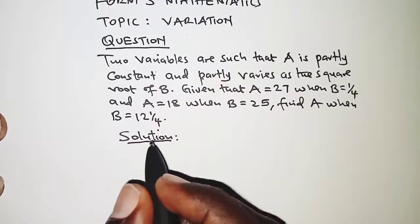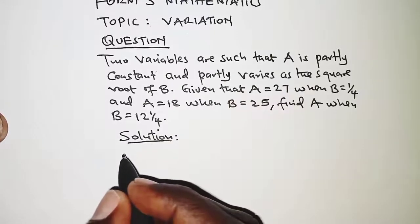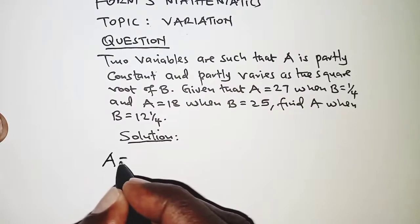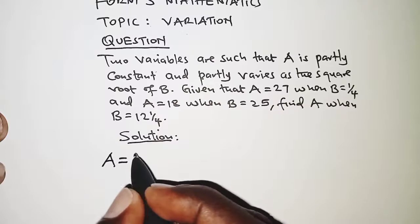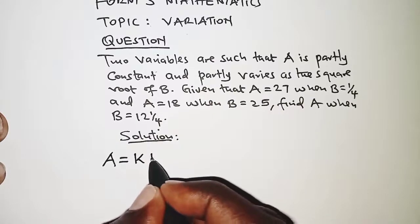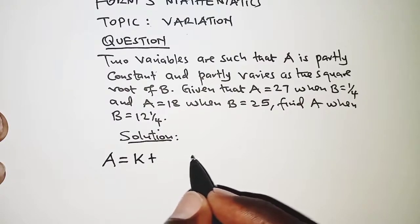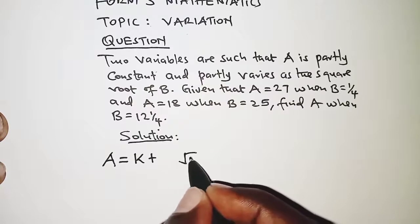We need to know that A and B are related as follows. We say A is partly constant, so we will represent a constant by a letter, say k, plus A also varies as the square root of B. If it varies as the square root of B,